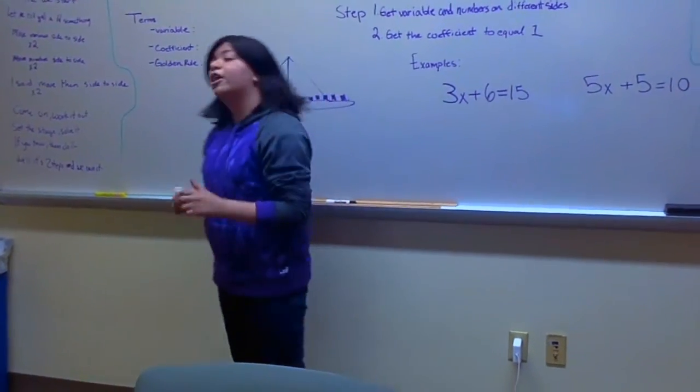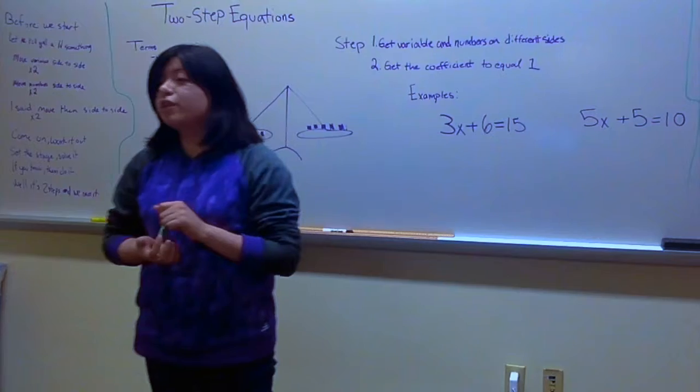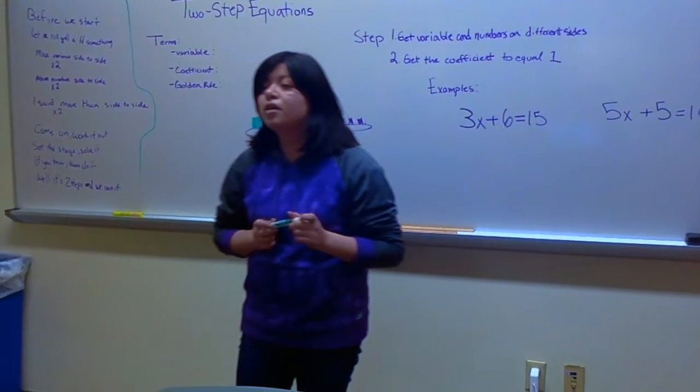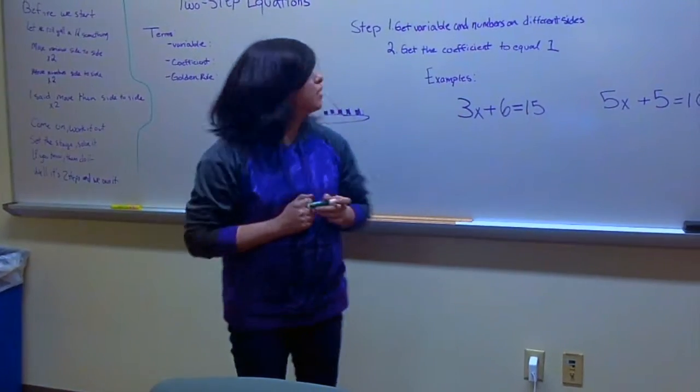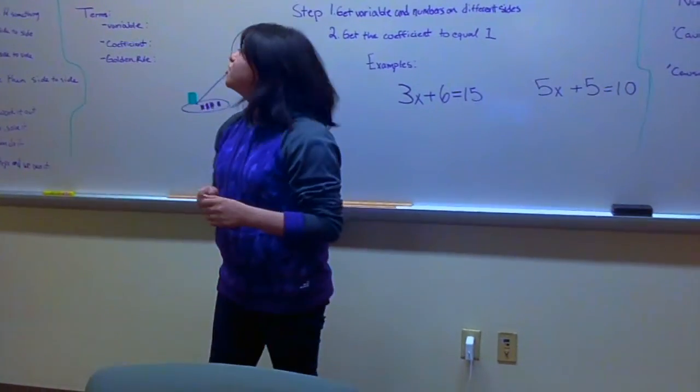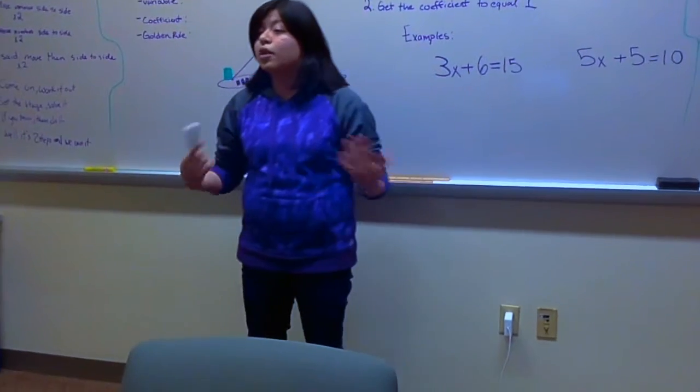So, one of them is a variable. Graciela, can you tell me what a variable is? It's an unknown letter in that equation. Alright, yeah. So, a variable is the symbol that we give an unknown number.